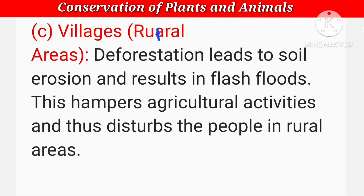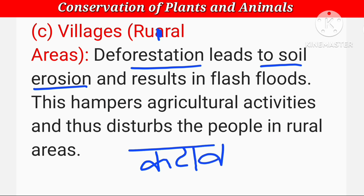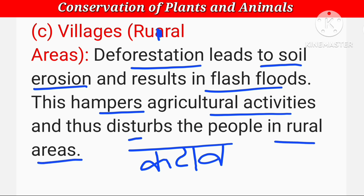Villages यानि rural areas पर deforestation का क्या फर्क पड़ता है। Deforestation leads to soil erosion — भूमी का कटाव बढ़ जाता है, मिट्टी बहने लगती है। And results in flash flood — क्योंकि जब पेड़ नहीं होते तो पानी मिट्टी में सोखा नहीं जाता, जितना पानी ऊपर से गिरा वो तुरंत बहकर चला जाता है और बाढ़ बन जाता है। इससे जो खेती की activities हैं, agriculture की, वो प्रभावित होती है और गाँव के लोग भी disturb हो जाते हैं।